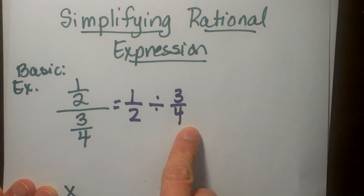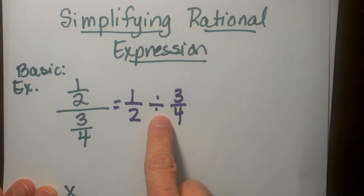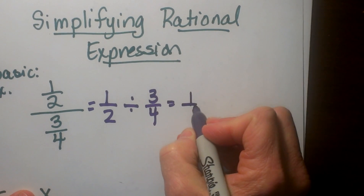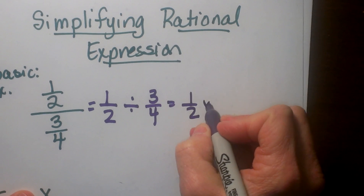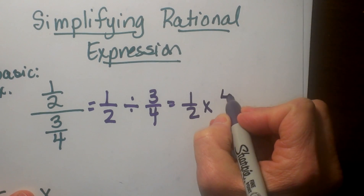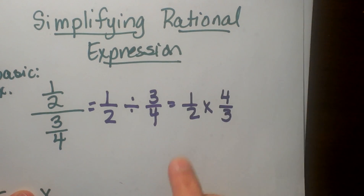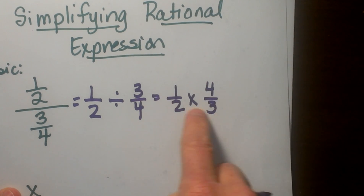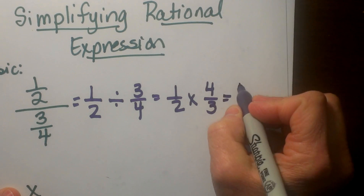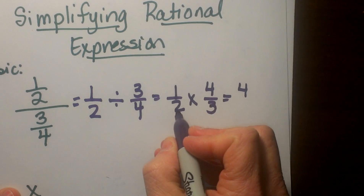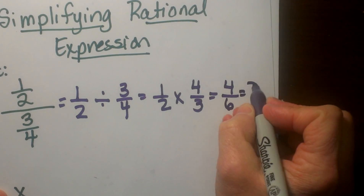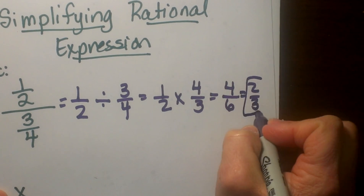Now we know that when we are dividing fractions we can use the rule: keep it, change it, and flip it. So we are going to keep the first fraction as one half, we are going to change this to multiplication, and we are going to flip — which is called the reciprocal. Now we can simplify this by just multiplying straight across. One times four is four, and two times three is six, and now we just reduce that to two thirds. So that is our answer.